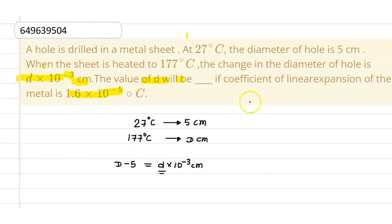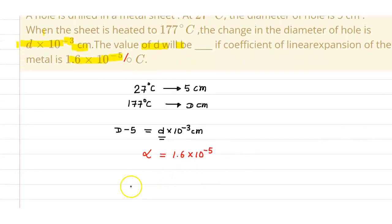This is the change in the diameter. And we have to find out the value of small d. And let us give that the coefficient of linear expansion, which is alpha, that is 1.6 into 10 raised to power minus 5 per degree Celsius. Now, let us know, we have learned in our linear expansion that the change in diameter will be initial diameter, initial diameter is 5 cm into alpha into delta T.